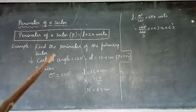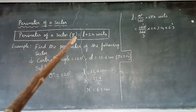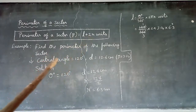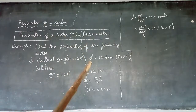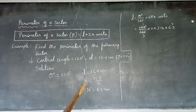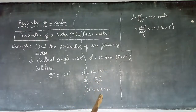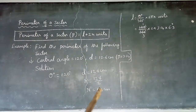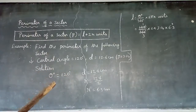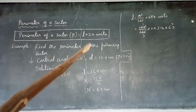We need to find the perimeter of the sector and the arc length. First, radius equals diameter divided by 2, which is 12.6 divided by 2, giving us 6.3 centimeters. So radius R = 6.3 cm, and θ = 120 degrees.